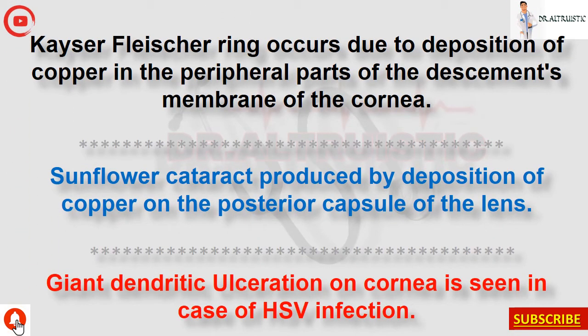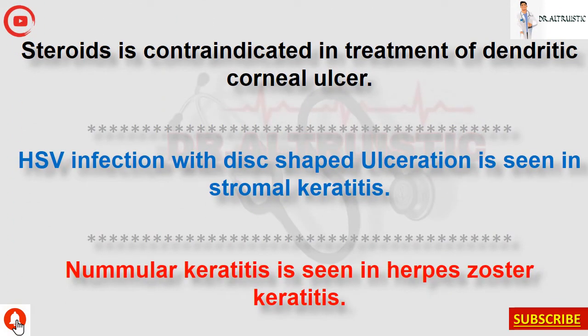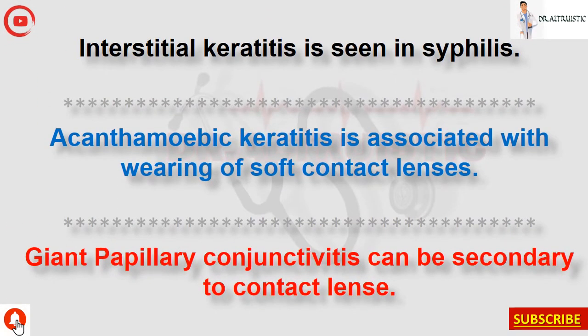Kayser-Fleischer ring occurs due to deposition of copper in the peripheral parts of Descemet's membrane of the cornea. Sunflower cataract is produced by deposition of copper on the posterior capsule of the lens. Giant dendritic ulceration on the cornea is seen in HSV infection. Steroids are contraindicated in treatment of dendritic corneal ulcer. HSV infection with disc-shaped ulceration is seen in stromal keratitis. Nummular keratitis is seen in herpes zoster keratitis. Interstitial keratitis is seen in syphilis.